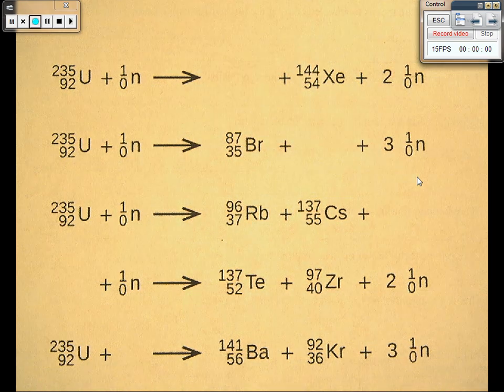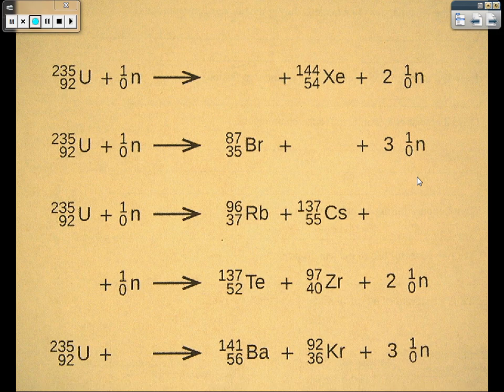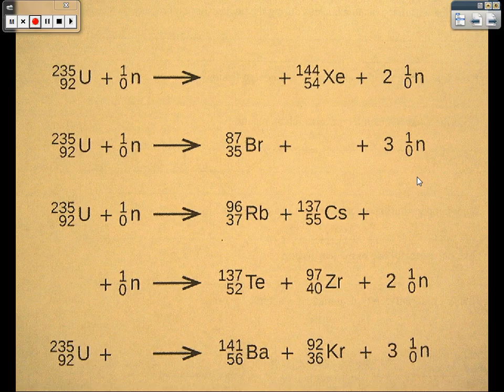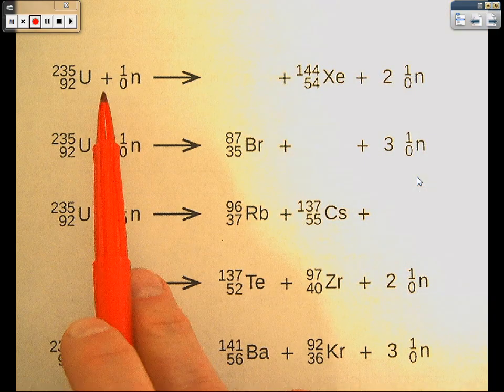Working out these fission and fusion equations is a matter of understanding that the sum of the mass numbers and the sum of the atomic numbers has to be the same on both sides of the arrow.